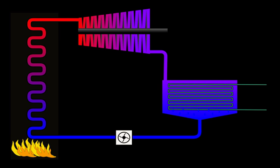Process 1-2, the working fluid is pumped from low to high pressure. As the fluid is a liquid at this stage, the pump requires little input energy. In other words, process 1-2 is isentropic compression in pump.